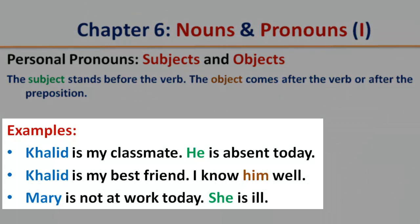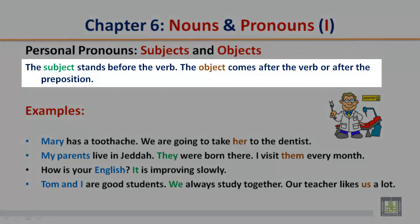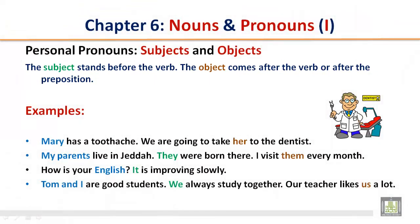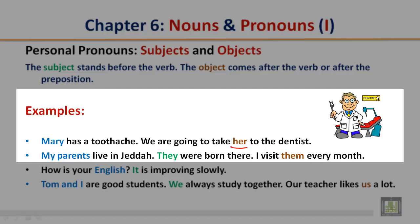Khaled is my classmate. He is absent today. Khaled is my best friend. I know him well — 'him' is an object. Mary is not at work today. She is ill. Mary has a toothache. We are going to take her to the dentist. My parents live in Jeddah. They were born there. I visited them every month.